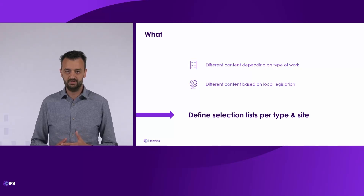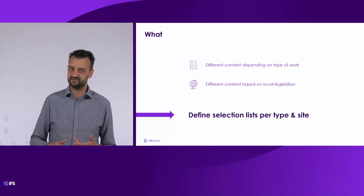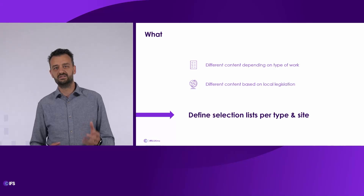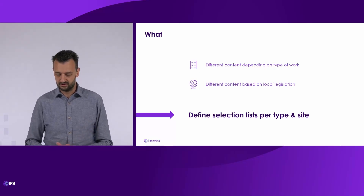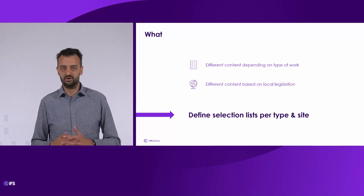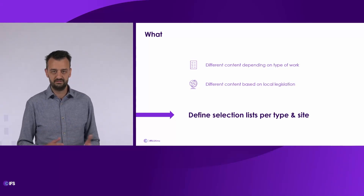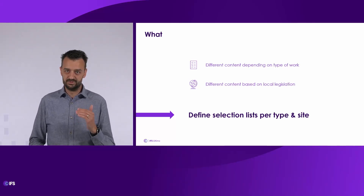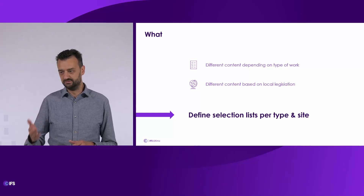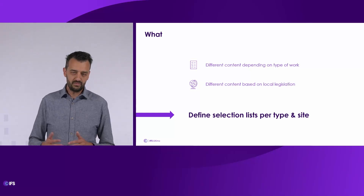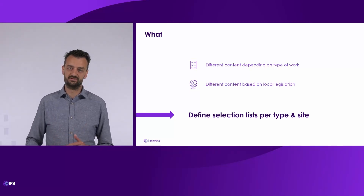So we introduce permit types — that can be hot work, working at height, confined space, and so on. For those types, you can indicate on a selection list that it's applicable only for that type of work. So you can create a specific selection list for flammable materials, for example, and indicate that it's only used for hot work permits. More or less the same for sites: you can indicate on a selection list that it's only applicable for specific sites, so that way you can create selection lists that are only applied in certain countries where you have special legislation to follow.